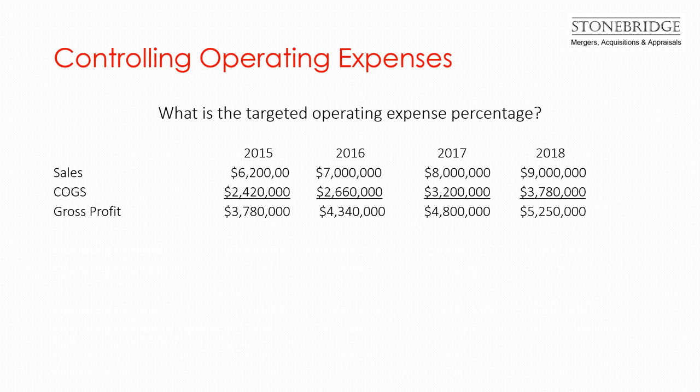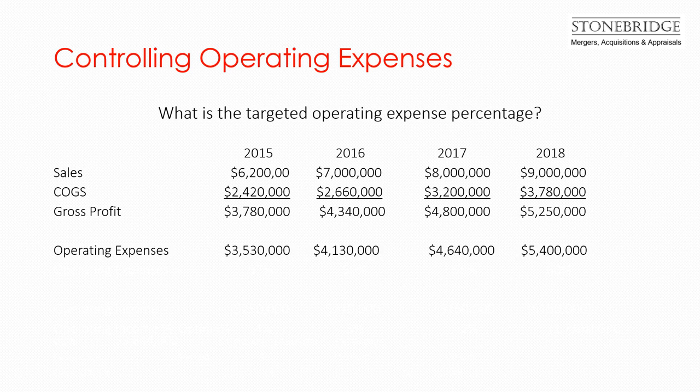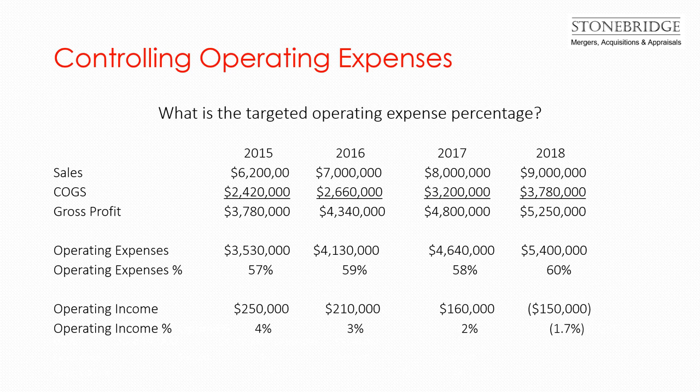In our company example, we have the sales, cost of goods sold, and gross profit — this is the gross profit contribution we'll be using. On the last line, we have the operating expenses that have incurred over the past years, with the operating expenses as a percentage of sales. And then we have the gross profit less operating expenses, which leaves us with the operating income and its percentage of sales.